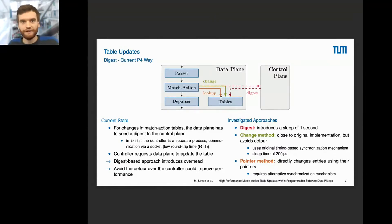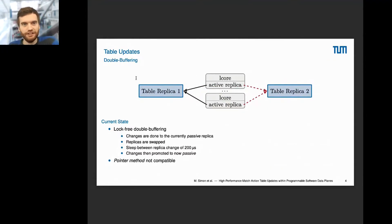TAPAS uses a double buffering mechanism to access the tables. This works the following way: when a lookup is performed, an active replica pointer is followed. We have two replicas both having the same table content. If some entry wants to be changed or updated, this change is first done to the currently passive replica. You can access in parallel the active replica for read access without any locks and without having any inconsistent state. Afterwards, the active replica pointer is changed, it sleeps for 200 microseconds, and then the change is promoted to the now passive replica.